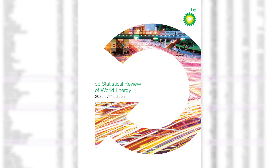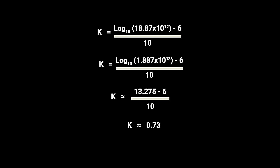Drawing from the BP Statistical Review of World Energy for the year 2022, which documents a global energy production of just under 19 petawatts, we can plug these figures into our equation. By doing so, we discover that Earth currently sits at 0.73 on the Kardashev Scale.